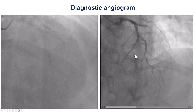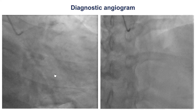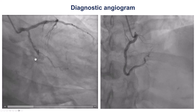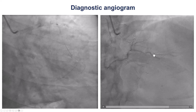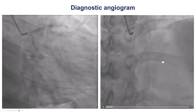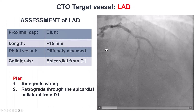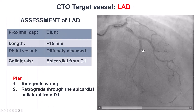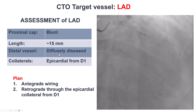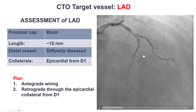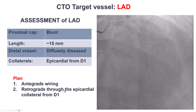It is a fairly long lesion, about 30 millimeters or so. There were no significant septal collaterals coming from the right coronary artery. We have a blunt proximal cap, lesion length 15 to 30 millimeters, diffuse disease in the distal vessel with heavy calcification, and an epicardial collateral coming from the diagonal.